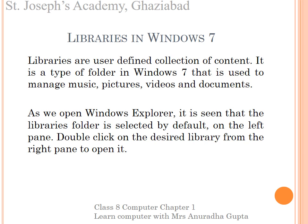Next, you have to learn about libraries in Windows 7. Libraries are user-defined collection of content. It is a type of folder in Windows 7 that is used to manage music, pictures, videos and documents. As we open Windows Explorer, it is seen that the libraries folder is selected by default. On the left pane, double click on the desired library from the right pane to open it.